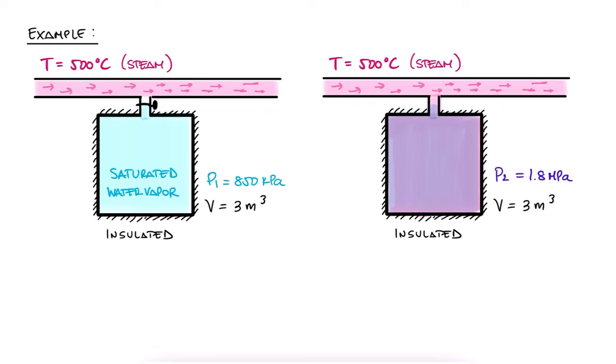At this instant, the tank temperature is measured to be 300 degrees celsius. Determine the mass of the steam that has entered, and the pressure of the steam in the supply line. As usual, pause here and try to solve this problem with what you've learned so far.